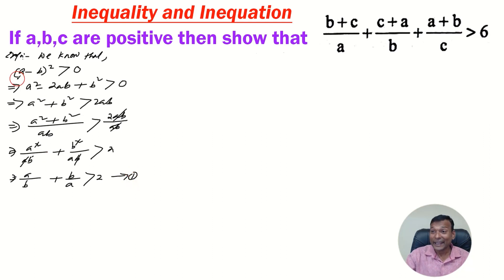Similarly, we can prove b by c plus c by b greater than 2. That means, if we take b minus c whole square, we will get this one. And c by a plus a by c is greater than 2. Let it be equation 3.